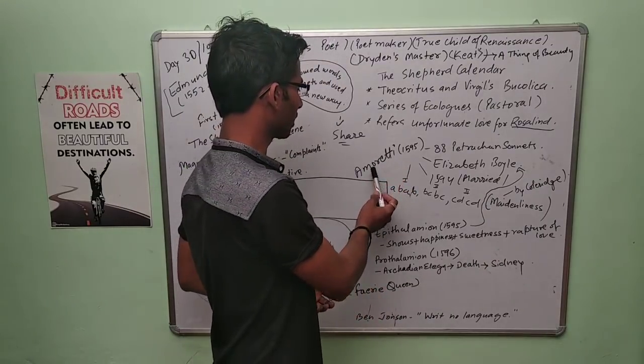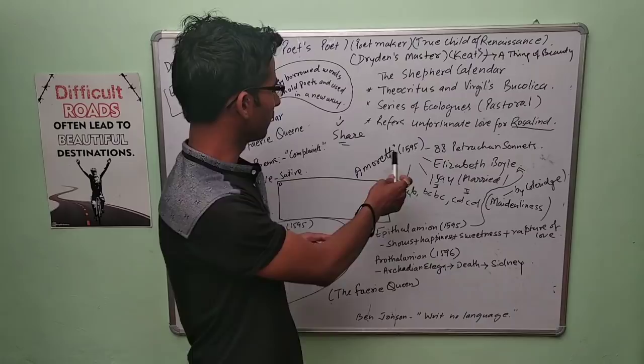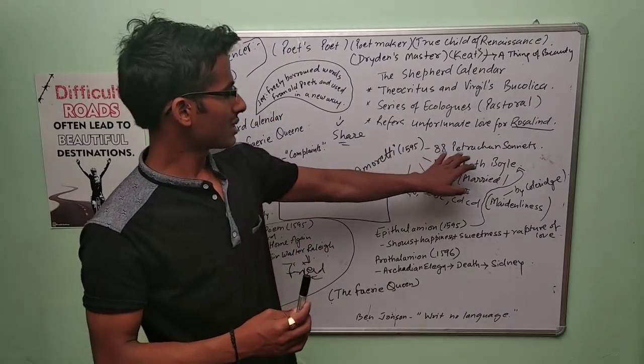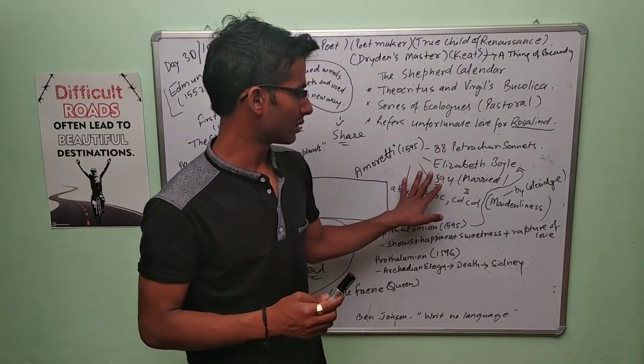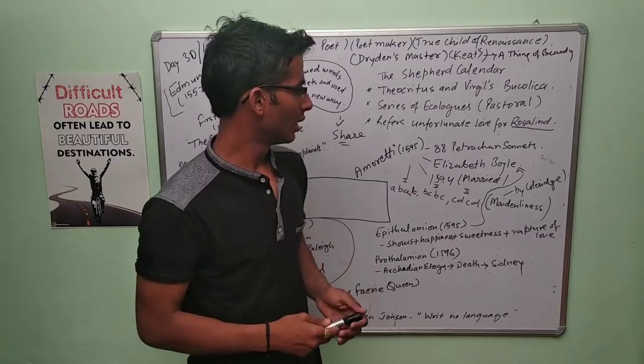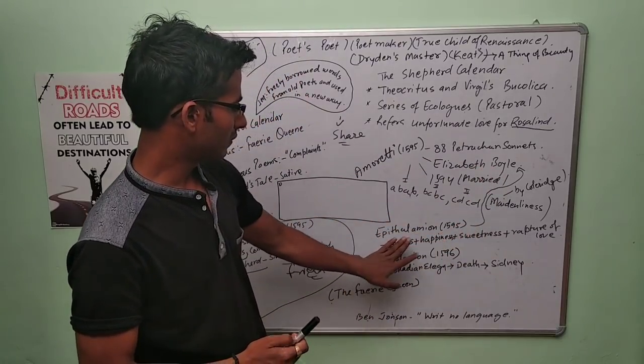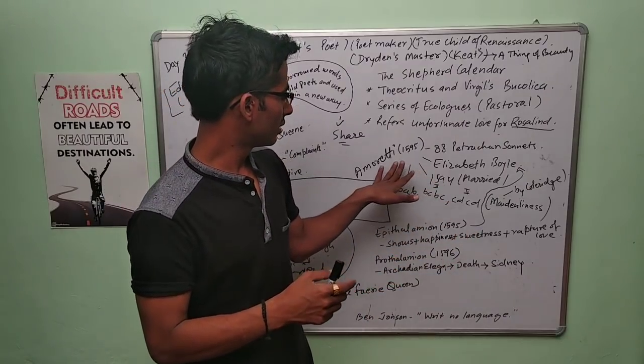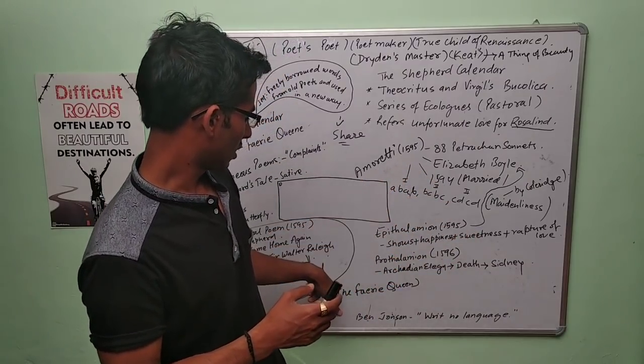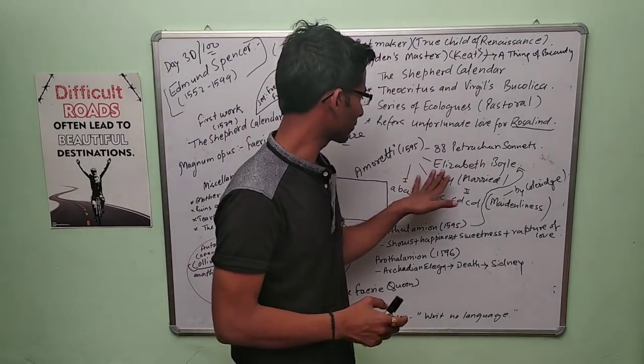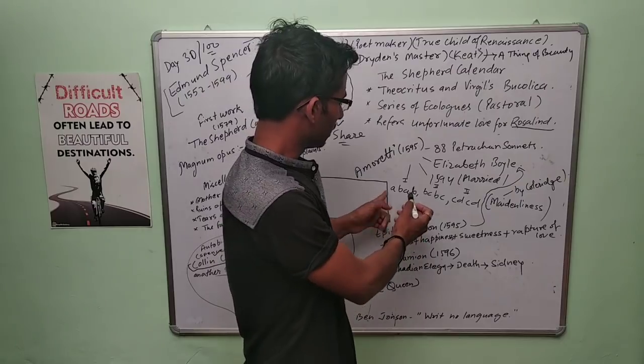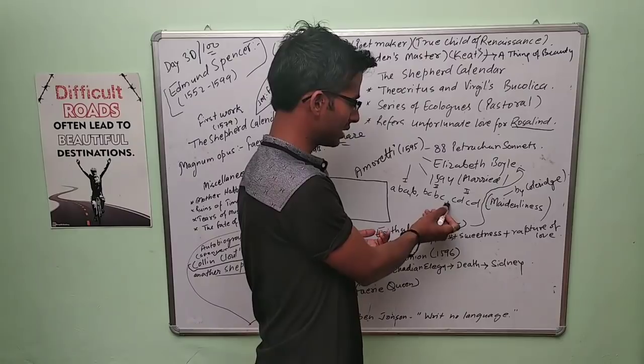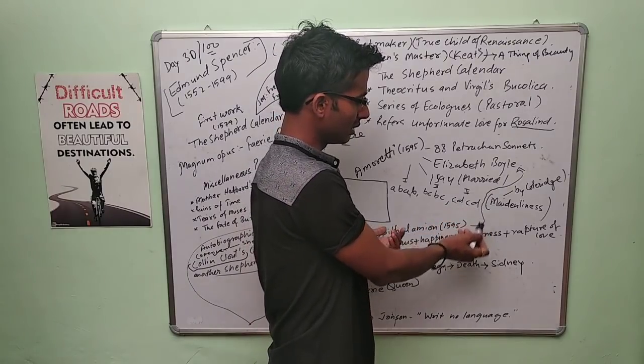Next work is Amoretti. Amoretti got published in 1595 with the same autobiographical poem. It has 88 Petrarchan sonnets and is written for Elizabeth Boyle. The rhyme scheme of this work is ABAB BCBC CDCD EE.